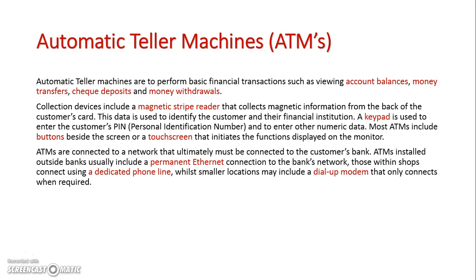The whole function of the automatic teller machine is to read a specific bank card. On the back of the card there is usually a magnetic strip. This magnetic strip gets read and then the user enters a certain pin code to identify it is their card. The teller machine provides many input devices for them to enter data into the machine, whether it be the keypad, buttons, or a touchscreen.